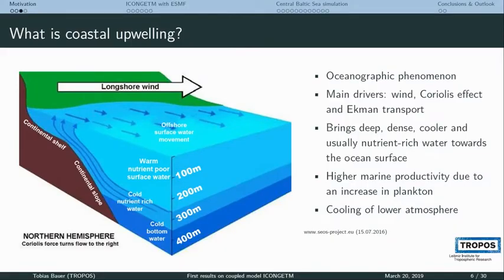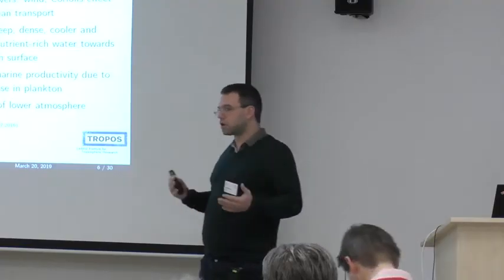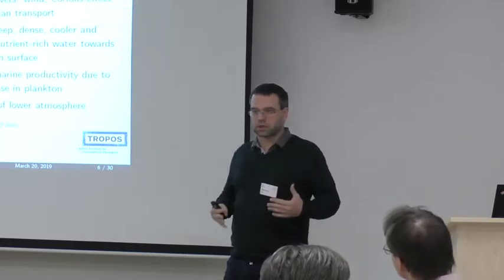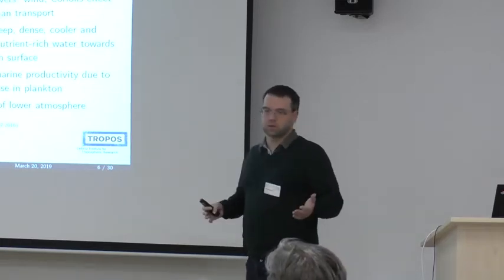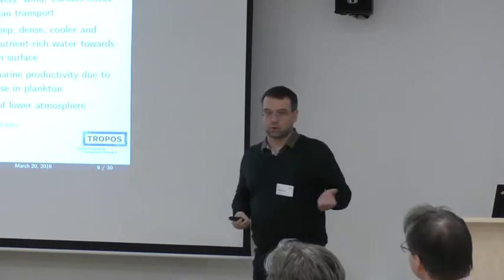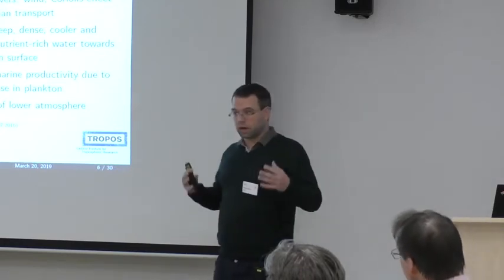Especially if cold water comes up from the bottom of the ocean, you also have a cooling of the atmosphere, creating a feedback mechanism in both directions — and that's what we want to investigate. We studied available coupled models for the Baltic Sea, which have been available for climate research at horizontal resolutions large enough to show that these events happen. But we are interested in the physical processes, so we need a much higher resolution — talking about a kilometer or even less. That's why we have to couple two models which can handle these resolutions.